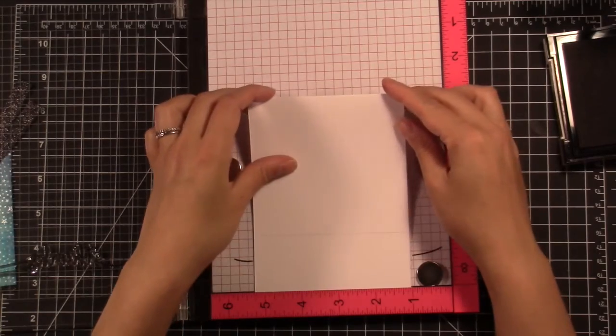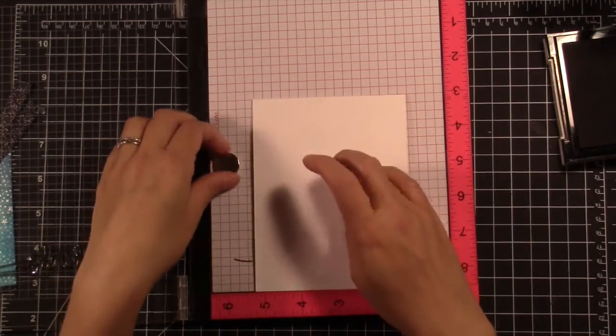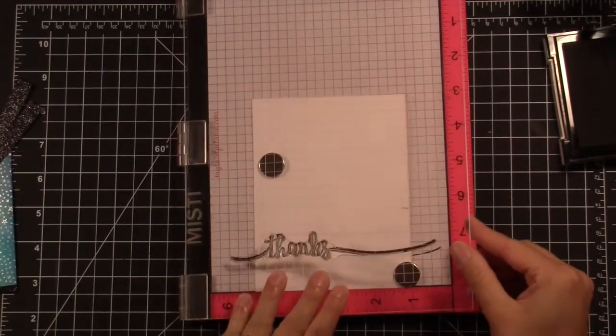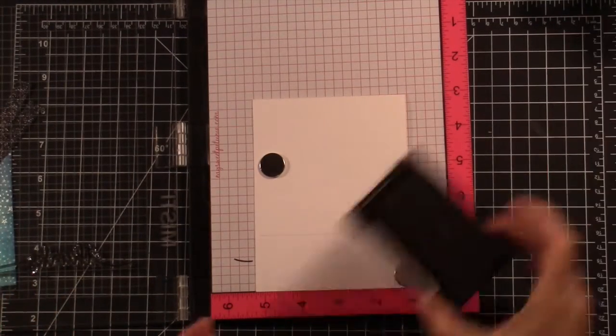And so I moved it to the center, and it worked out fine because I still have the tail ends of the sentiment to use as guidelines as to where I need to place my card base to get the sentiment stamped perfectly every single time. So it just worked out fine.